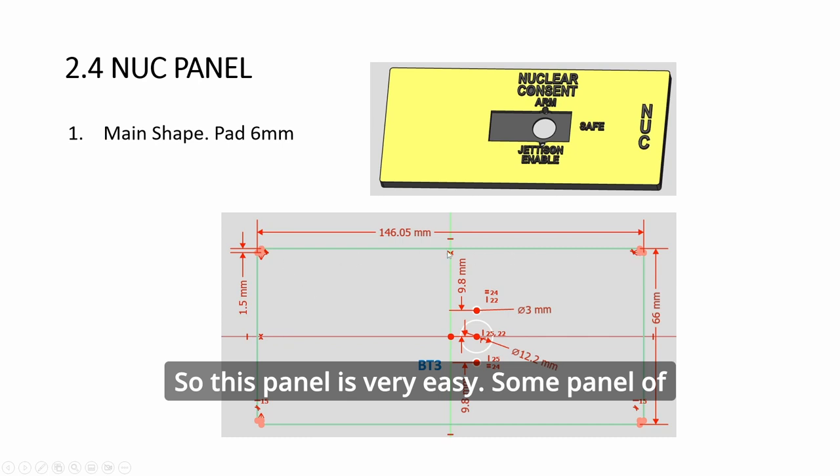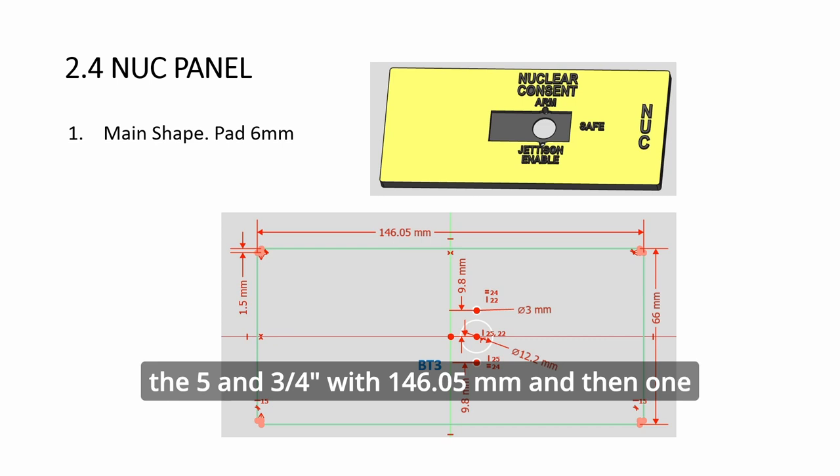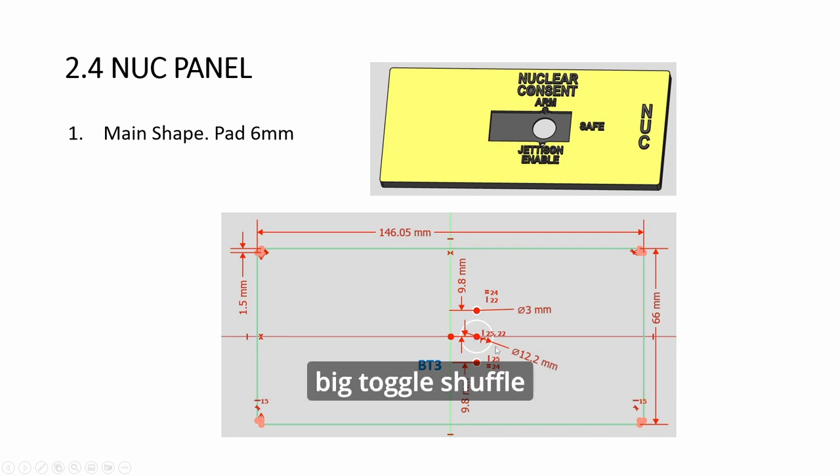Some a panel of the five and three-quarter inches with 14605 mm and then one big toggle shuffle with two locking holes. That's it.